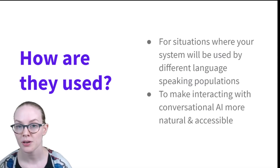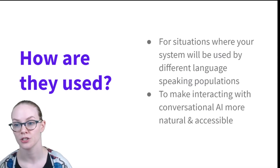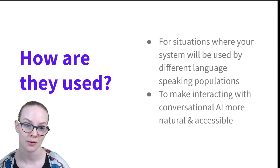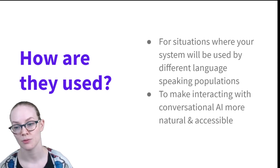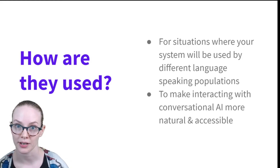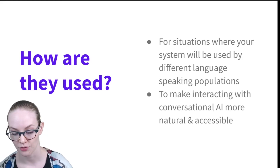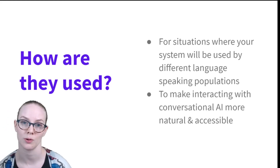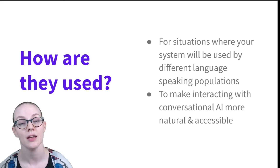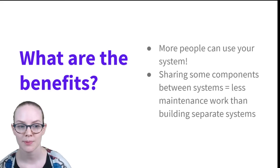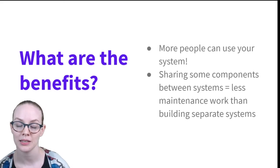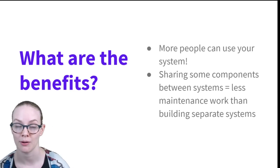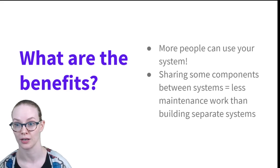Multilingual systems are very important for situations where your system will be used by people who are speaking different languages. A big benefit is that it can make interacting with conversational AI more natural and accessible, particularly if you are working with users who use code switching a lot. If your system can handle code switching in a very natural way for them, that's great accessibility. The biggest benefit is that more people can use your system, and people who may have a preference for one language over the other can choose their preferred language.